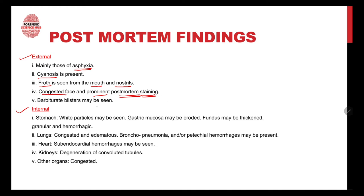Barbiturate blisters may also be seen on the skin. Internally, in the stomach, white particles can be seen; the gastric mucosa may be eroded, and the fundus may be thickened, granular, and hemorrhagic. The lungs are congested and edematous, bronchopneumonia can be seen, and petechial hemorrhages may or may not be present. Subendocardial hemorrhages may be seen in the heart, degeneration of the convoluted tubules in the kidney, and other organs may be congested.